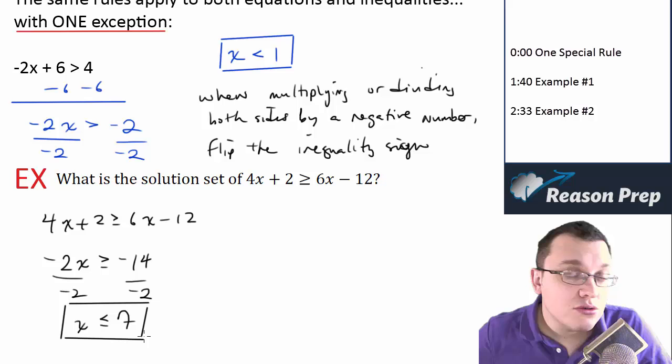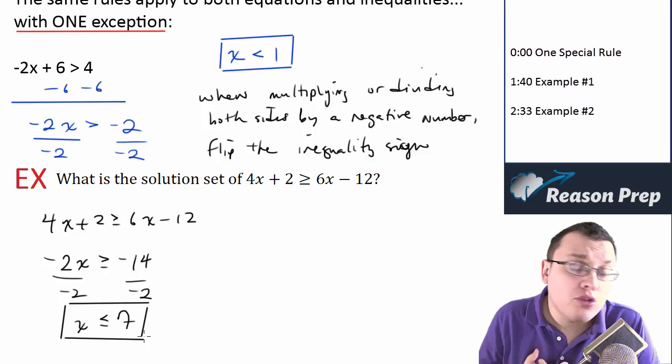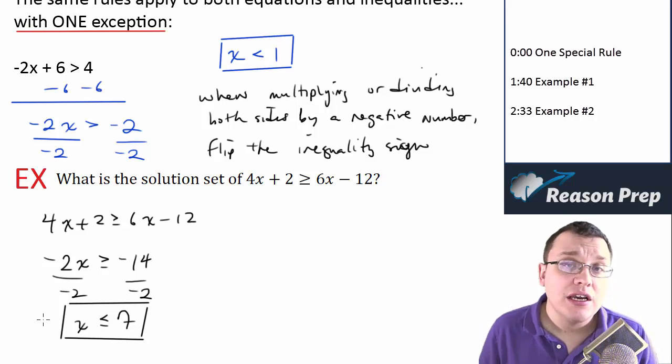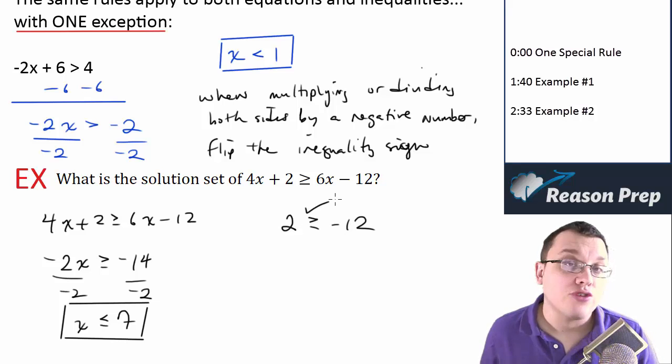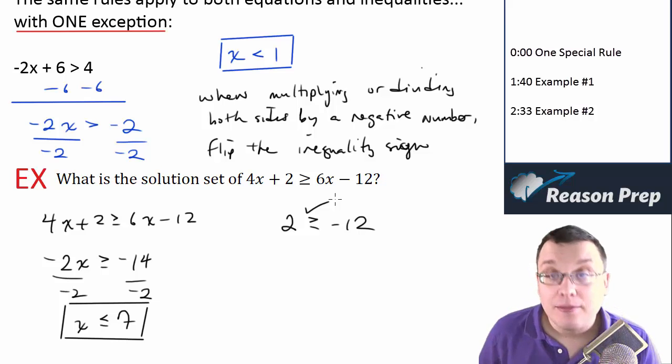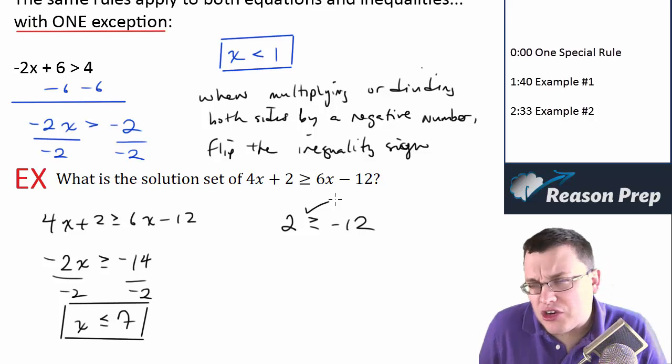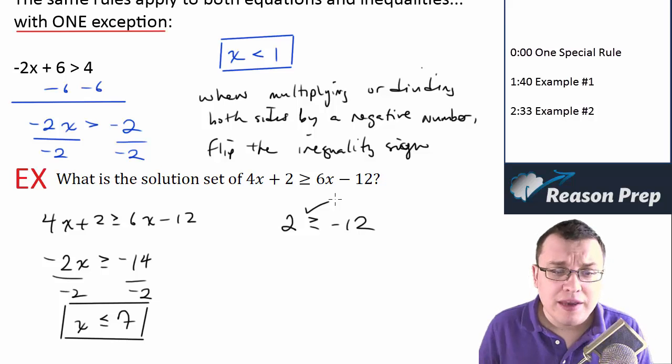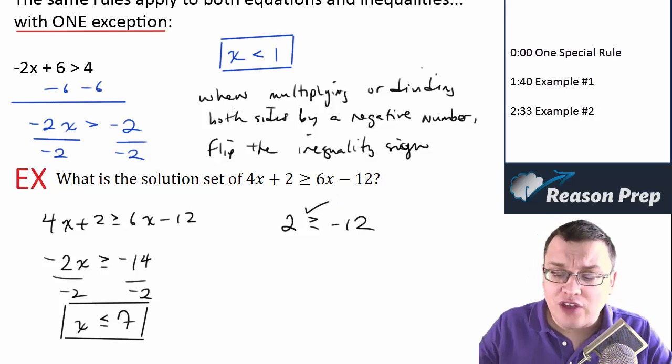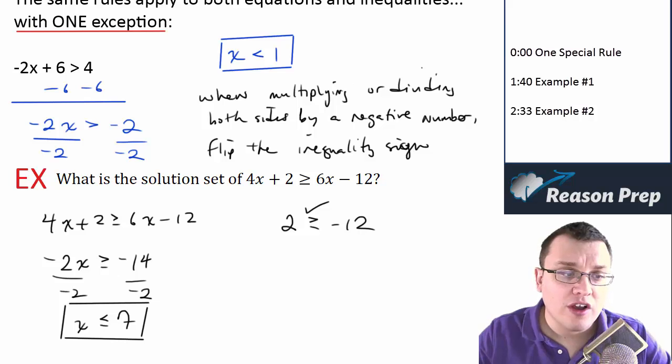With these inequalities, just to avoid any issues, I recommend plugging in some points from your solution to make sure it works. So for example, let's plug in 0. So if I plug in 0, I'm going to get 2 is greater than or equal to -12, and that is true. If you plug in 10, you will see it doesn't work. So that's just an example of plugging in some points just to double check, make sure you didn't make any mistakes. But remember that trick, flip the sign when you divide or multiply both sides by a negative.